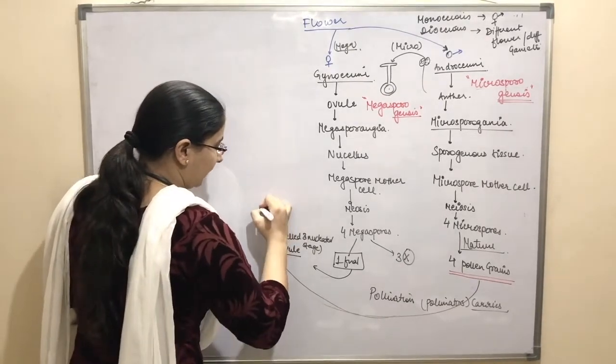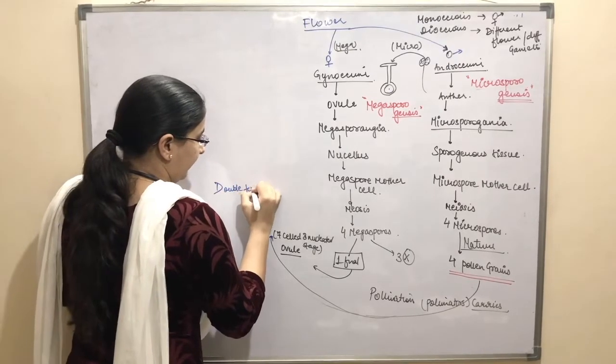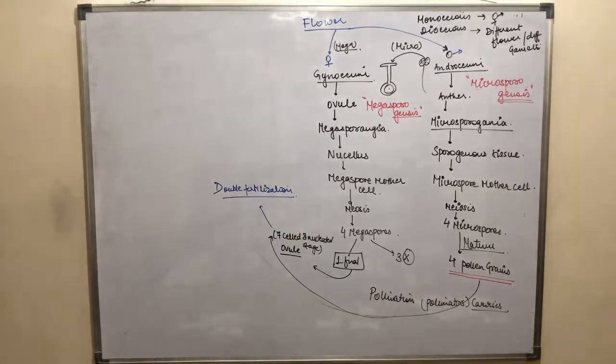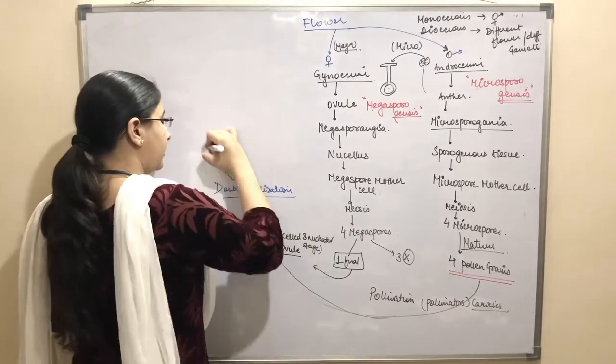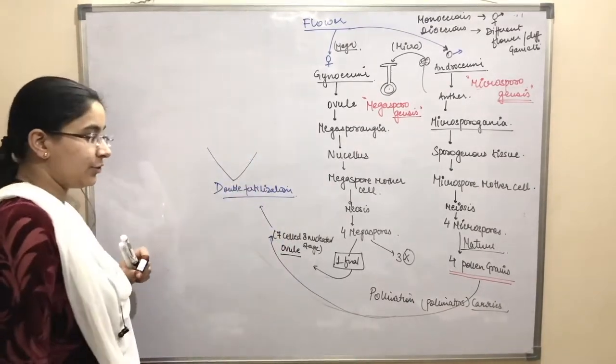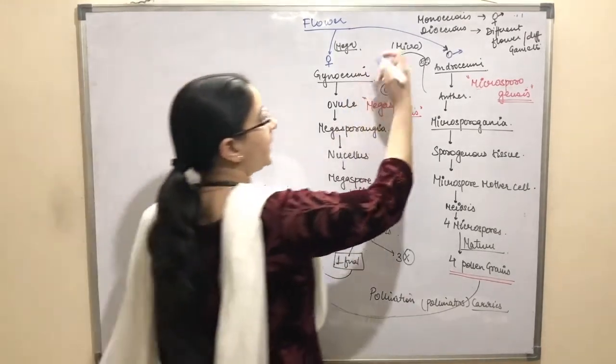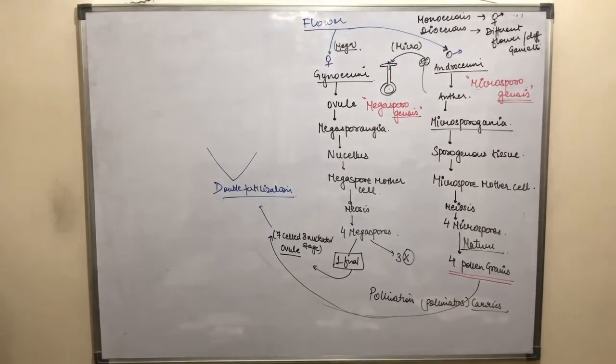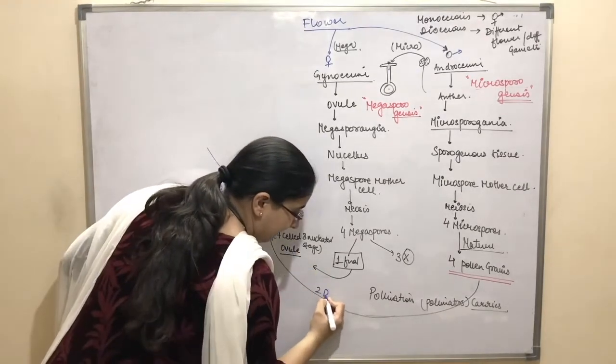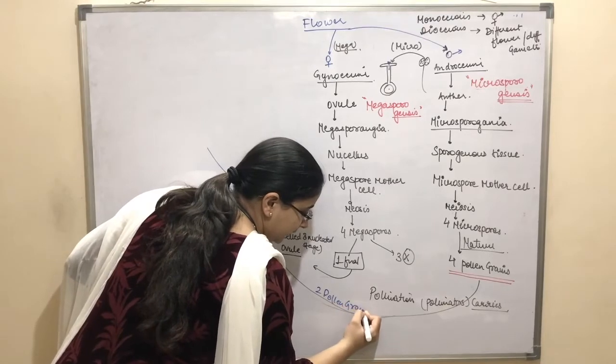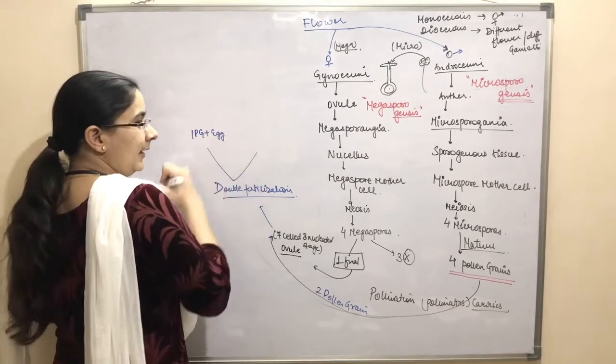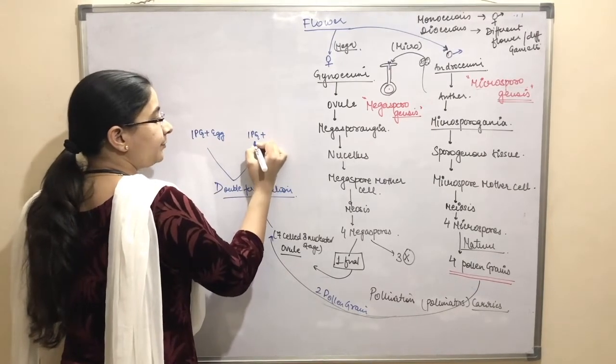When fertilization happens between pollen grains and ovule, this type of fertilization is called as double fertilization. Two pollen grains will move towards your ovule. One pollen grain will fuse with the egg and one pollen grain will fuse with two polar nuclei.